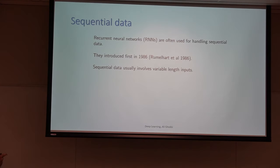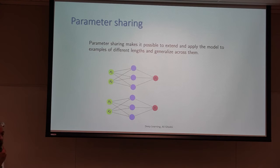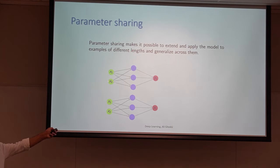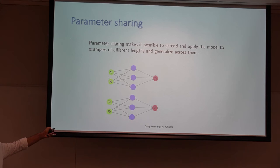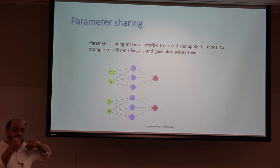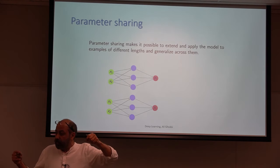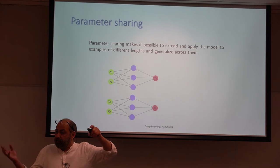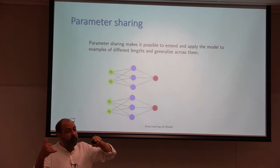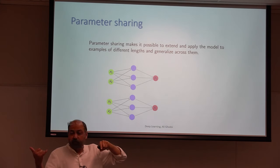Anyway, RNN was invented in 1986. The idea is that we know feed-forward neural networks: suppose you have a word and want to make a prediction — we know how to do that with a feed-forward neural network. Now suppose you are in a situation where you have a sequence and the length of that sequence is not fixed — it could be this word and the word before, or this word and ten or 100 words before.